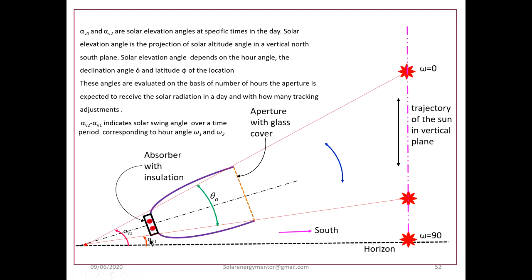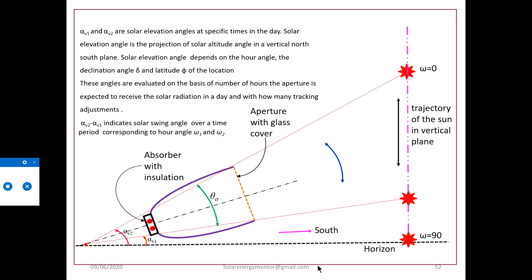Alpha-v1 and alpha-v2 are solar elevation angles. The swing of the sun over a period from hour angle +ω_t to −ω_t represents the solar swing. The difference alpha-v2 minus alpha-v1 should at least be equal to the acceptance angle so that no adjustment of the aperture is needed over that day. Solar elevation angle depends on hour angle ω, declination angle δ, and latitude φ of the location.